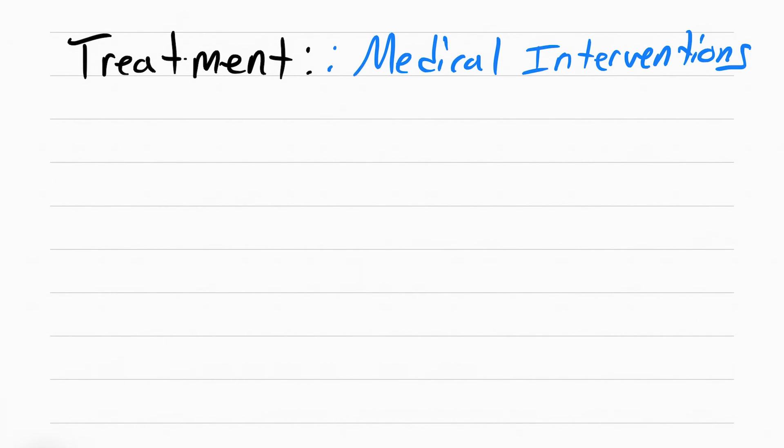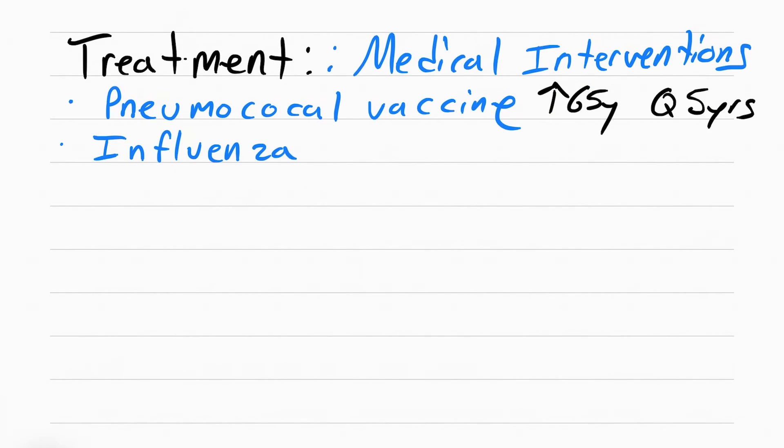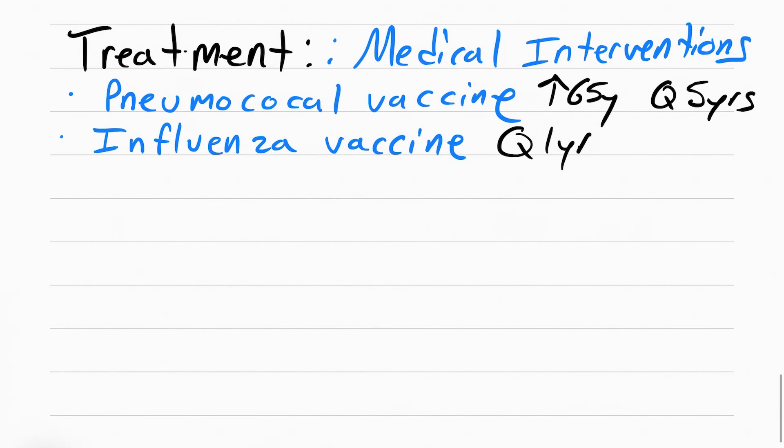For medical interventions, before the patient even gets pneumonia we can prevent it with the pneumococcal vaccine to prevent pneumonia. This is for patients who are 65 years and older, and they should get this every five years. We can also give the influenza vaccine to prevent influenza, which often causes pneumonia, every single year.